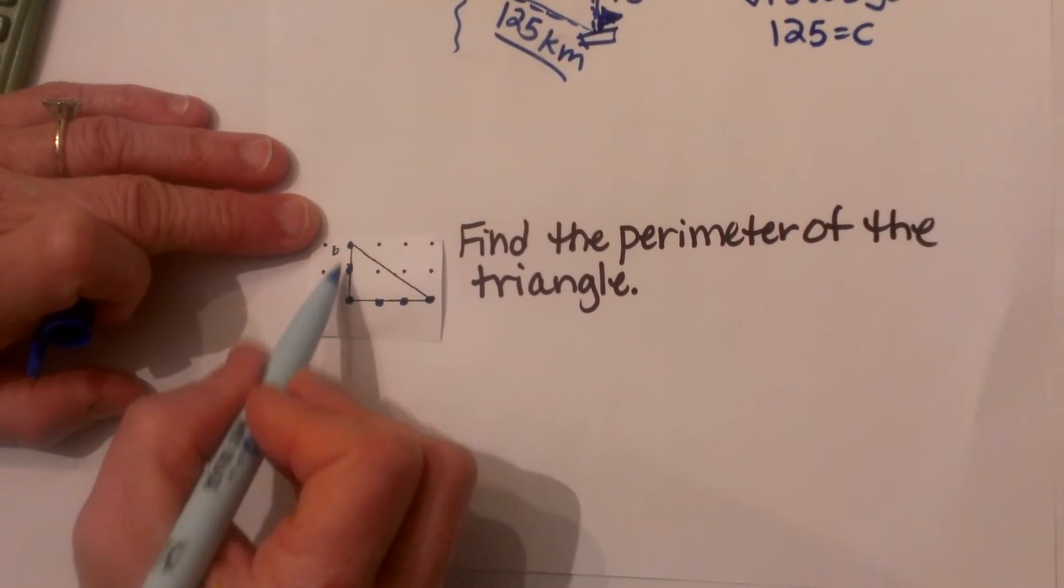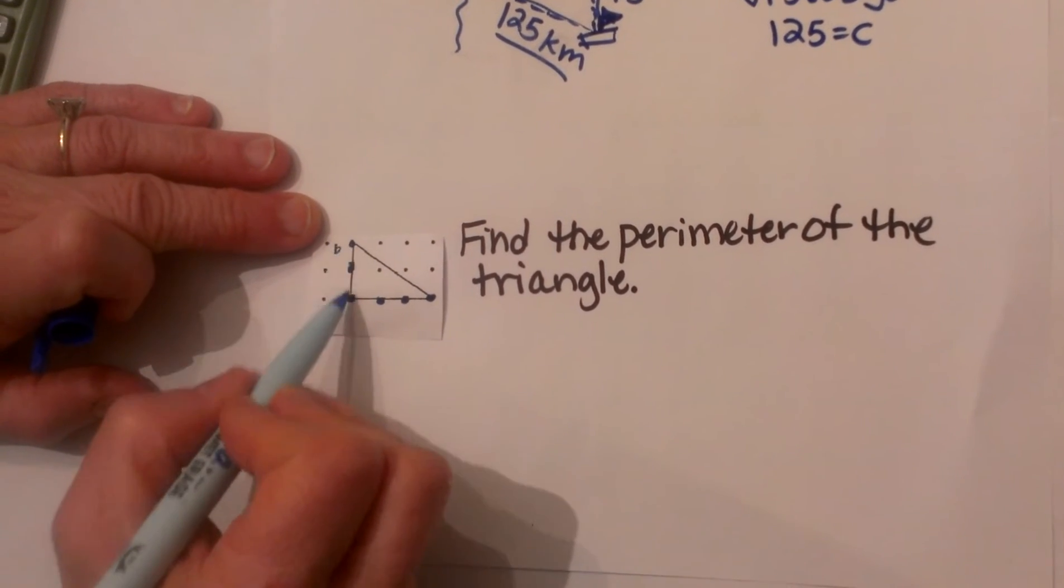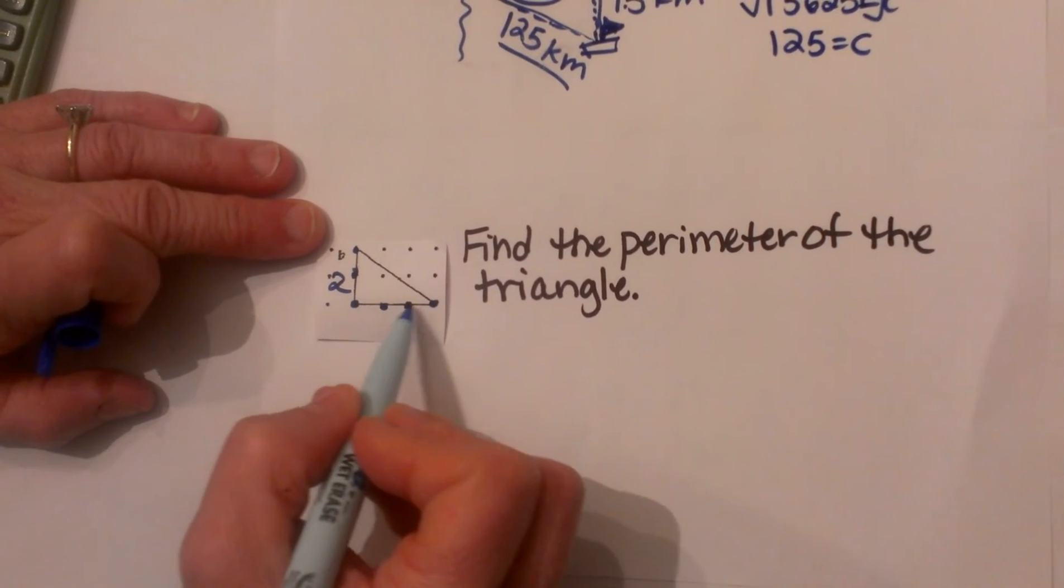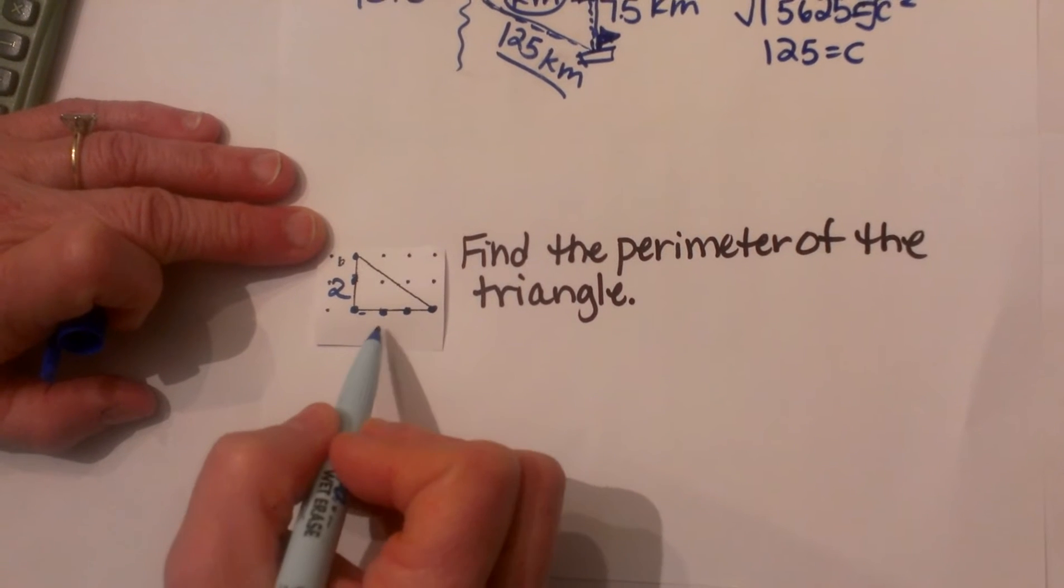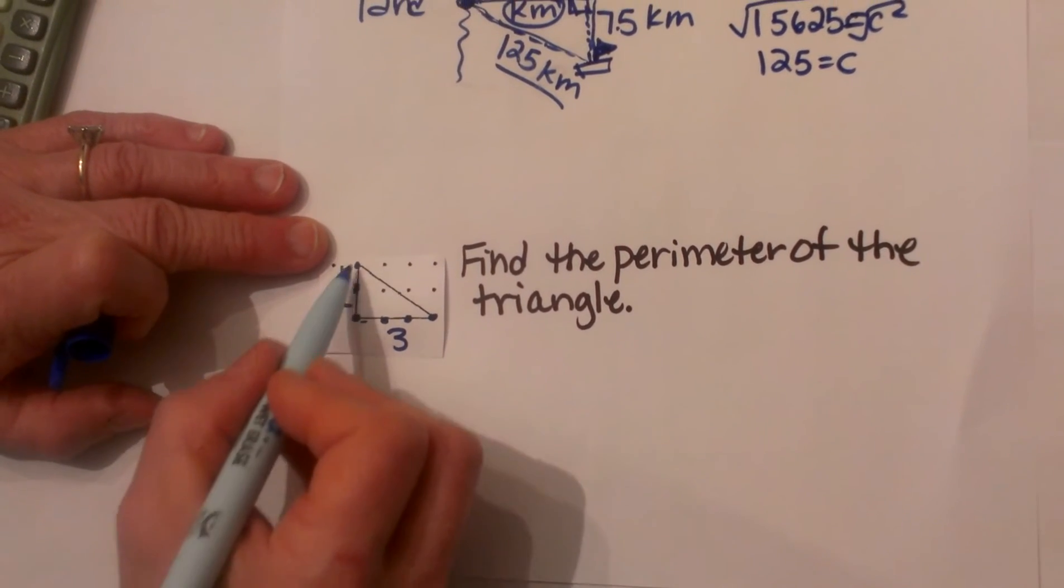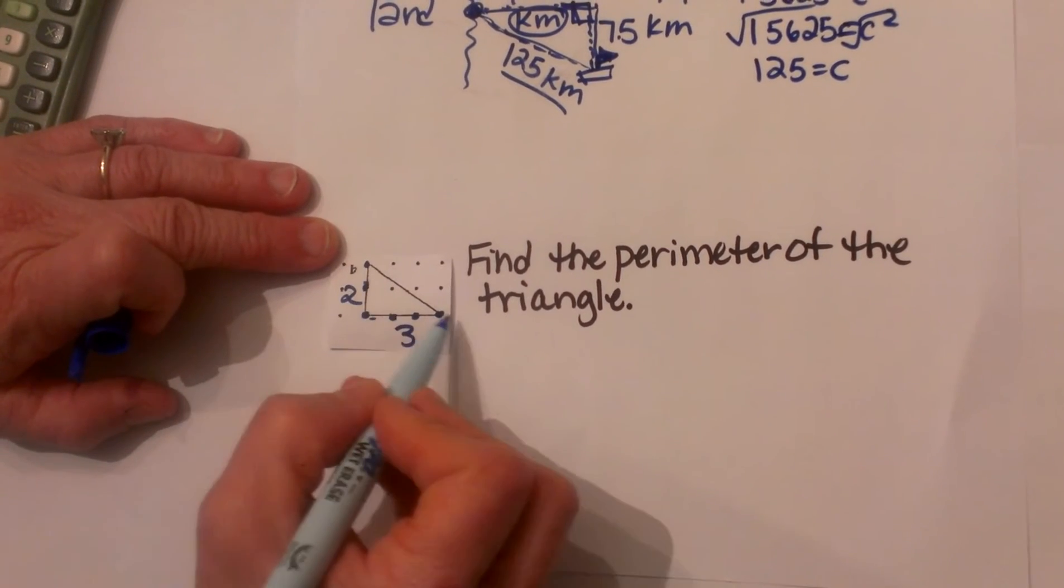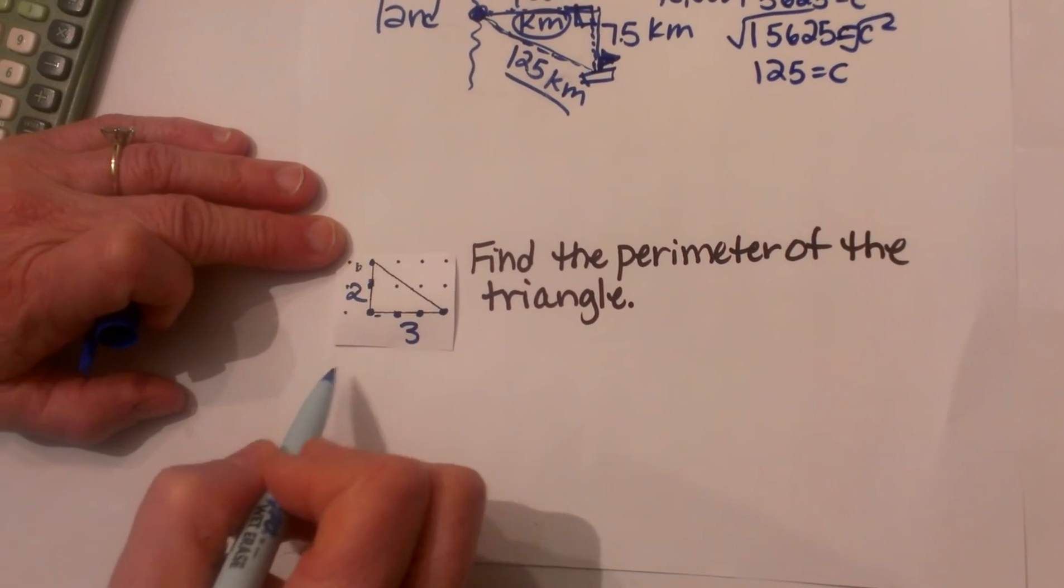The side that we can actually count, this vertical side, has two units, so that is two units tall. And the base is one, two, three units long. We need to find the perimeter. Well, for a perimeter we are going to add all the sides. So we know two sides and we need to know the third side.